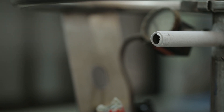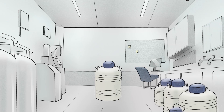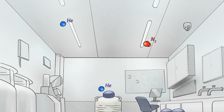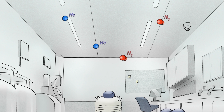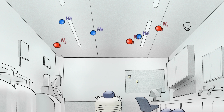Both nitrogen and helium are odorless and colorless, hence it won't be possible to detect the gas leaking into the surrounding space. Helium and nitrogen are lighter than air, so these gases will rise up and fill the space in which they are released.